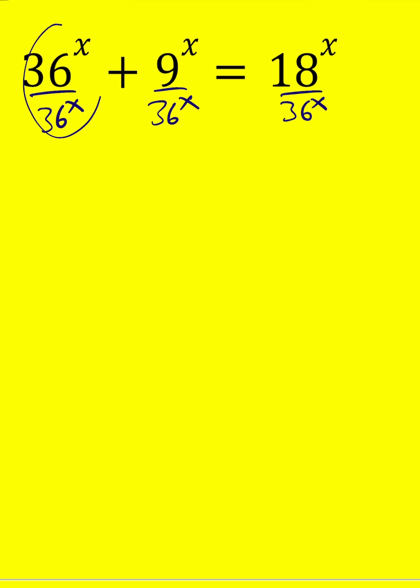Now when we do that, this is going to give us 1, which is good. 9 out of 36, that is 1 fourth, so we can write it as 1 fourth to the power x. And 18 goes into 36 two times, or twice. So now we can write it as 1 half.